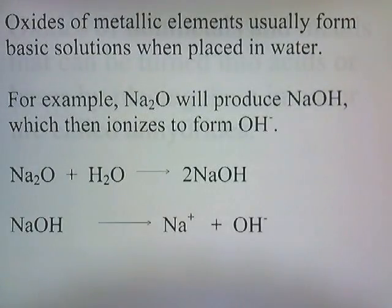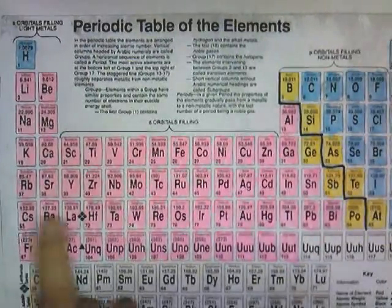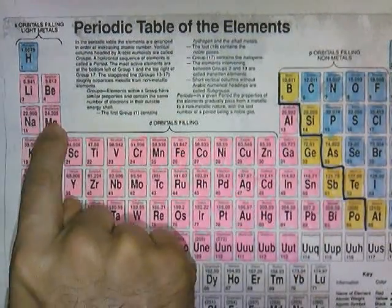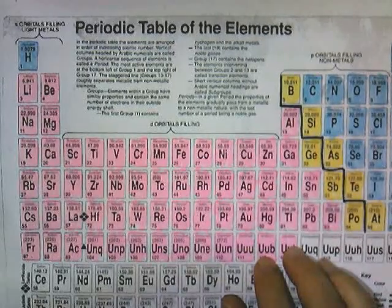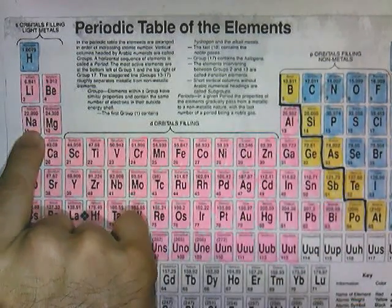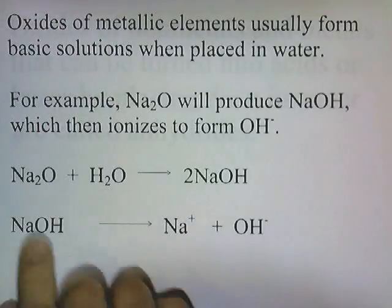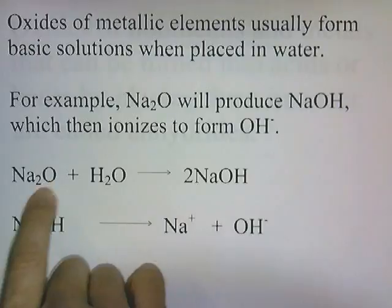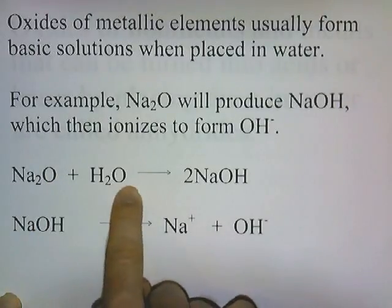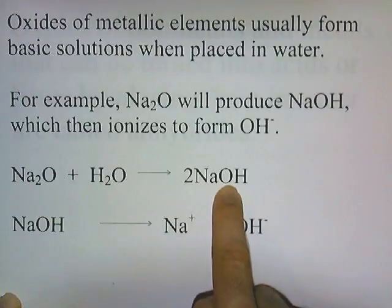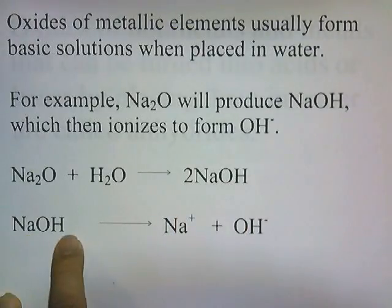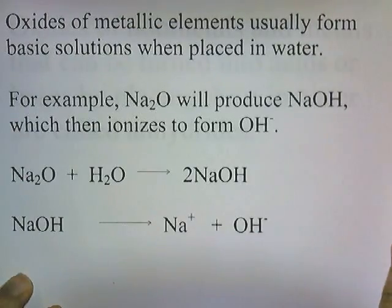Oxides of metallic elements usually form basic solutions when placed in water. For example, Na2O will produce NaOH, which then ionizes to form hydroxide. A metallic oxide means metallic elements — magnesium combined with oxygen, rubidium combined with oxygen, or in this example, sodium combined with oxygen. A metal oxide reacting with water produces a basic substance. The NaOH then dissociates to produce OH-, and the presence of the OH- in water makes it a basic solution.